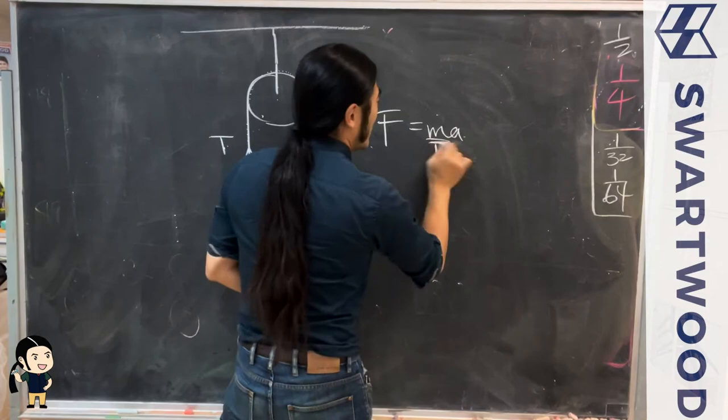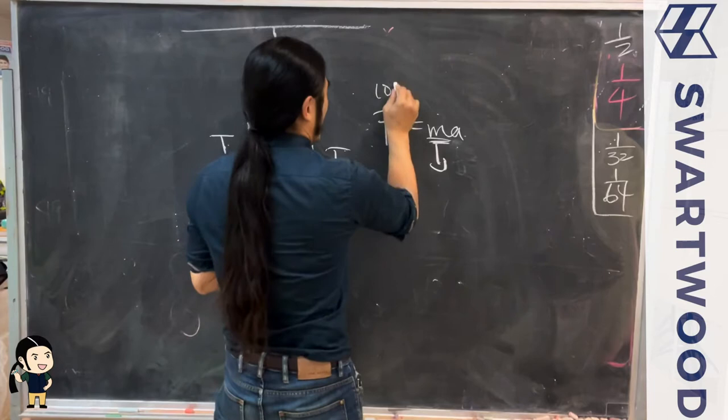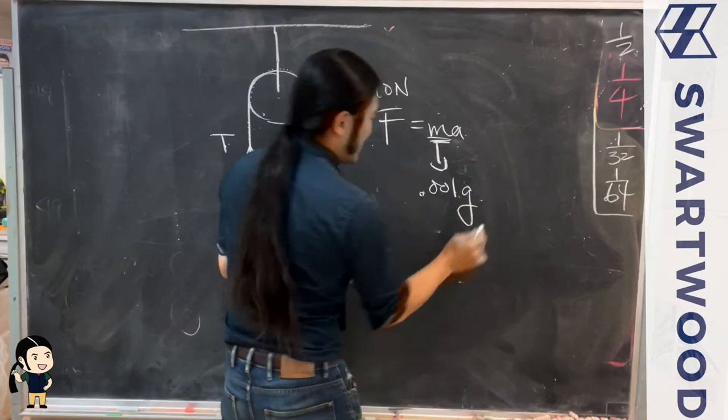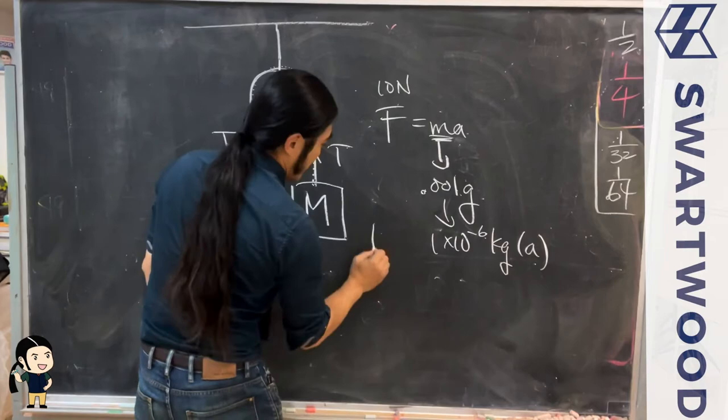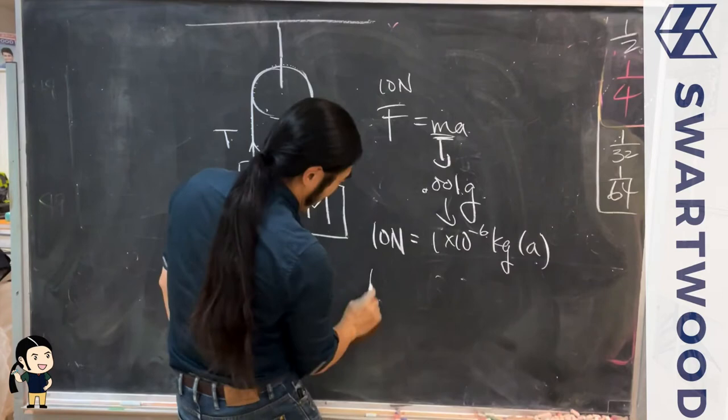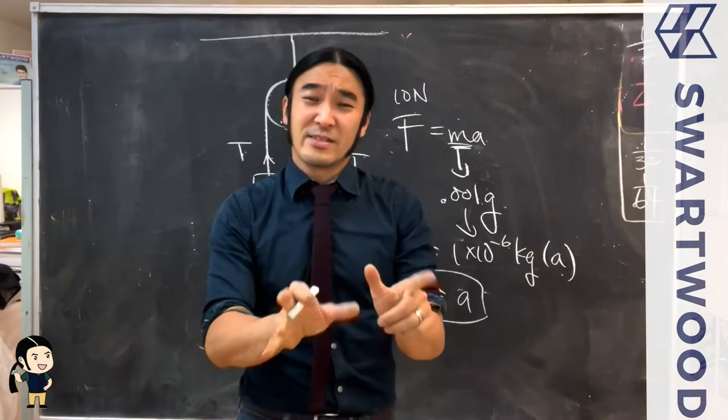So let's say like 10 Newtons and the mass is like 0.001 grams, something like that. First convert to kilograms - that would be 1×10^-3 grams, which is 10^-6 kilograms. So a 10 Newton differential on this guy would end up being what, 1×10^7 for the acceleration, and that's insane.